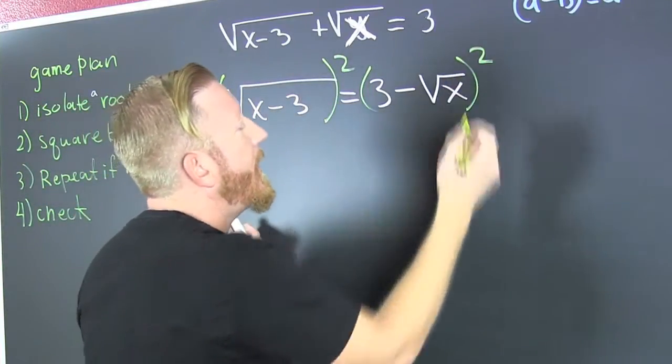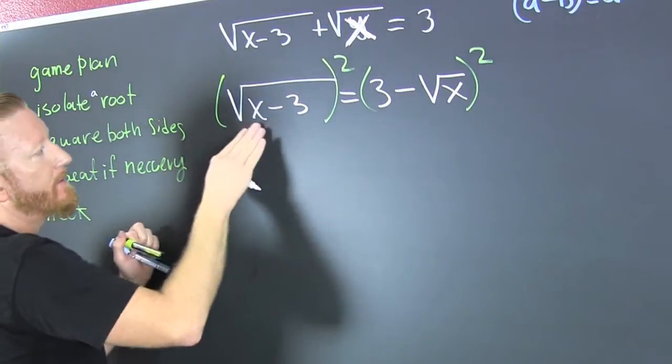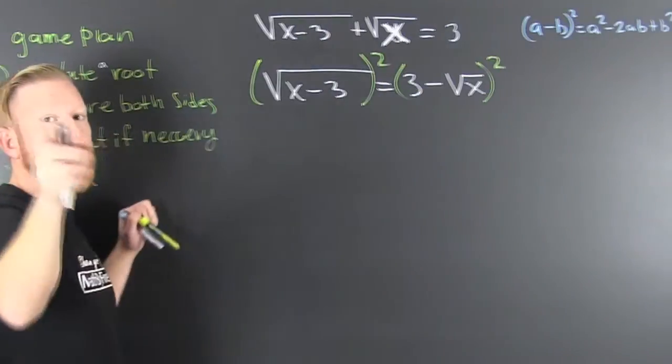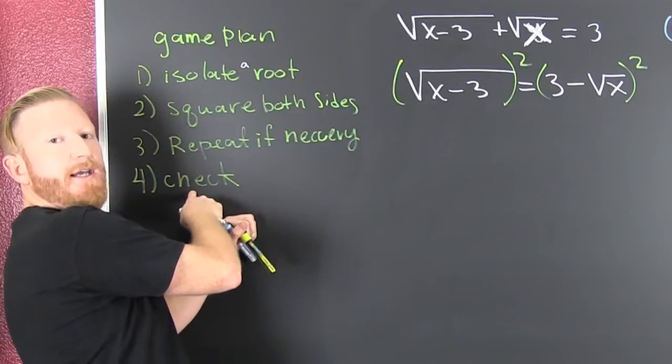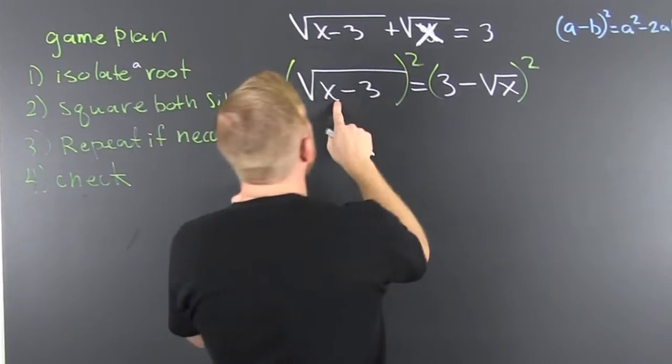So then I square that and I square that. Left on the left side, I'm left with that radicand. Whenever you square both sides, you need to check it because you could be introducing extraneous roots.